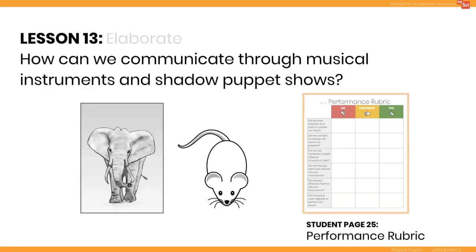For the Elaborate portion of this lesson, you'll need to decide if your class will perform the show as a whole class or in smaller groups, with each group performing a show. You may choose different books to use if you have more than one group presenting. Have students decide who will play the music and who will work with the puppets. Remind the musicians that they need to think about how they will use pitch, rhythm, and volume to communicate feeling throughout the performance. Puppeteers should decide how they will use shadows and sizes of shadows to tell the story of the Seven Blind Mice.